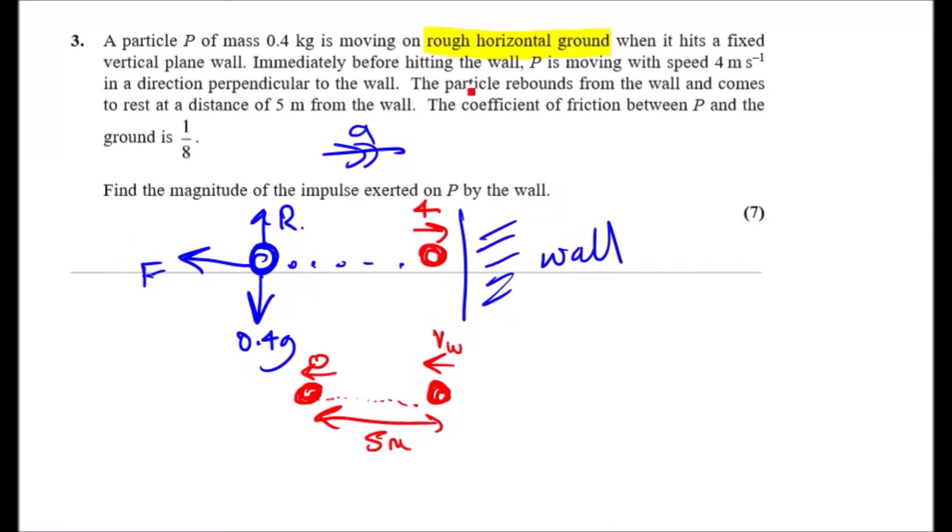Now, the particle itself rebounds from the wall and comes to rest at a distance of 5m from the wall. So, let's draw the next diagram here. Suppose it rebounds from the wall. We don't know what the after speed is yet. So, let's call it the speed after the wall. It's going to travel to a certain distance 5m away and eventually it will come to rest. This is where it comes to rest with speed, of course, 0. Now, the coefficient of friction between P and the ground is an eighth. So, mu equals an eighth.